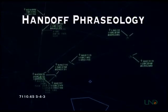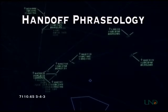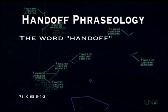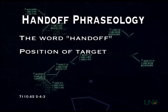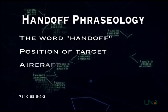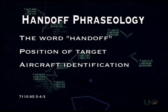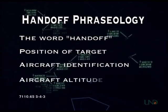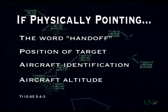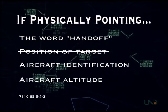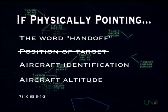The phraseology for a manual handoff contains the following items, which must be stated in this order: the word handoff; the position of the target relative to something depicted on the radar display of both controllers, such as navigational fixes or airports; the aircraft identification, which could be a call sign or a discrete beacon code if the call sign is not displayed to both controllers; and the altitude of the aircraft. If you are physically pointing to the receiving controller's display, you do not need to state the target's position, but the rest of the information must still be stated.